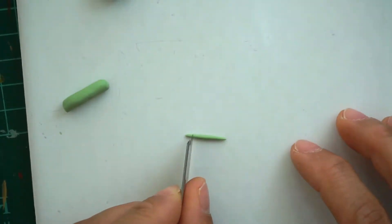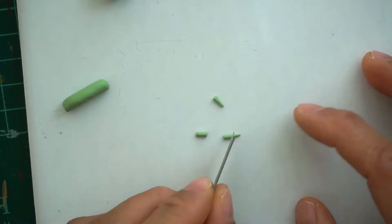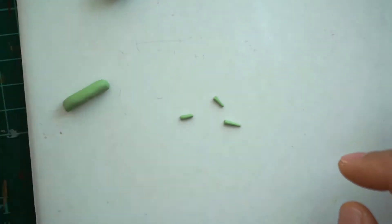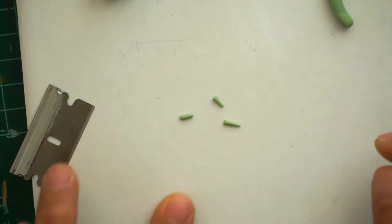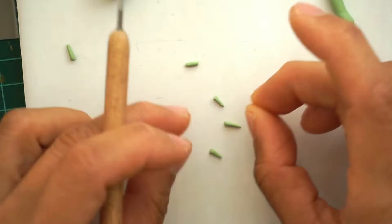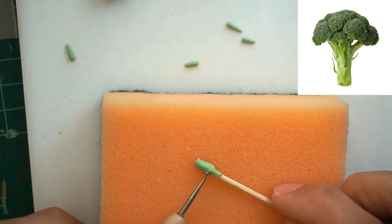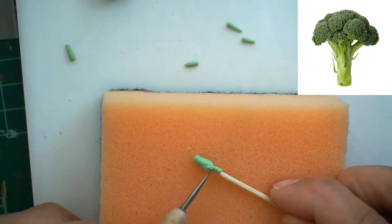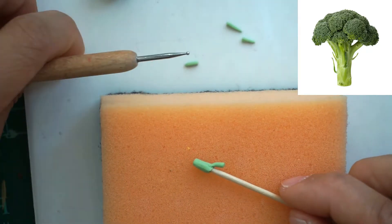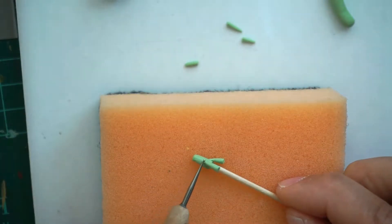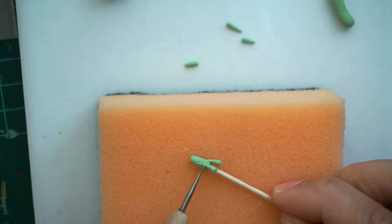Next, roll another light green clay to a snake, this time roll and cut it smaller than the stock. This will be our stem. Place the stock on top of the sponge before attaching the stems - the sponge will keep the form of your stock. You can attach as many stems as you like, but here I just attached four.